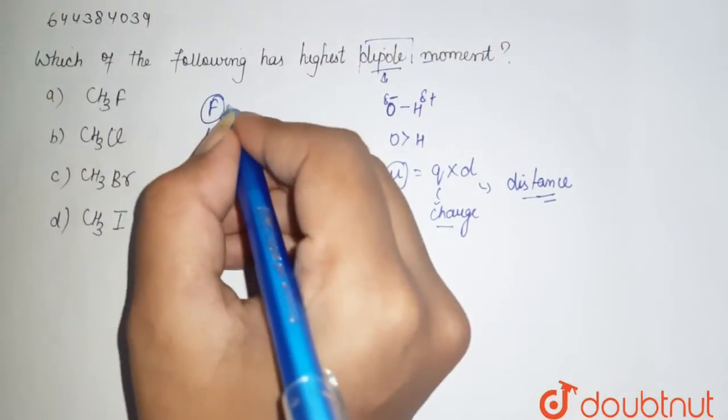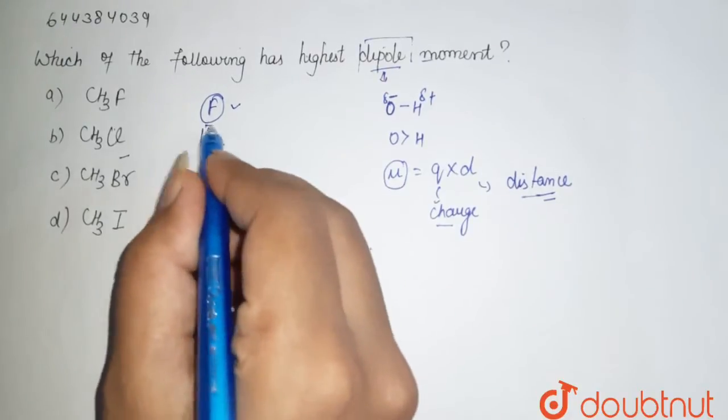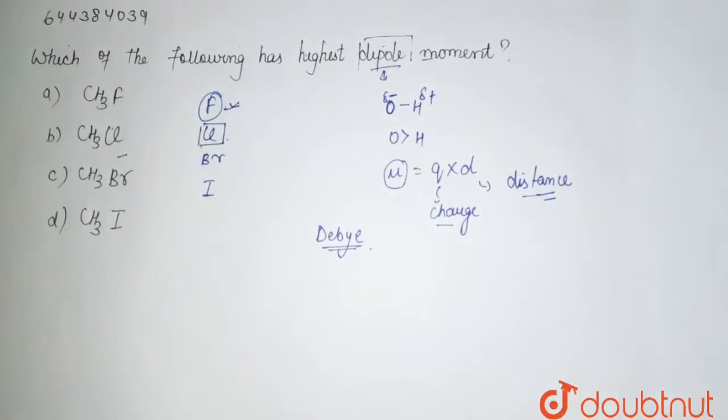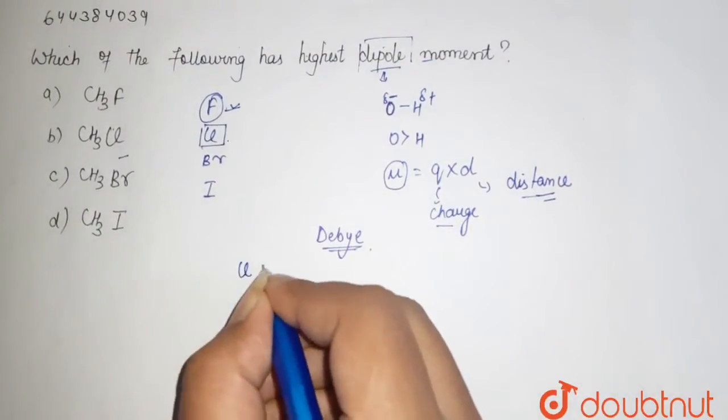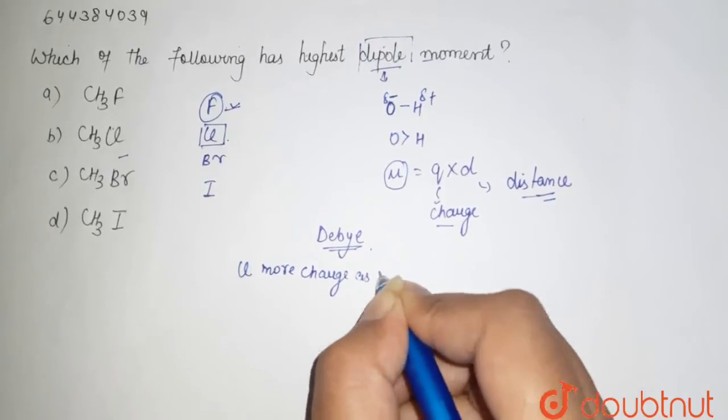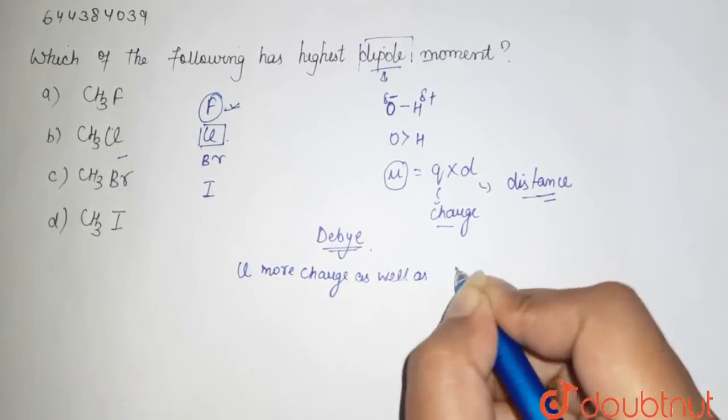No doubt fluorine is more electronegative than chlorine. But here chlorine has greater size than fluorine. See, in chlorine there is more charge as well as long distance.